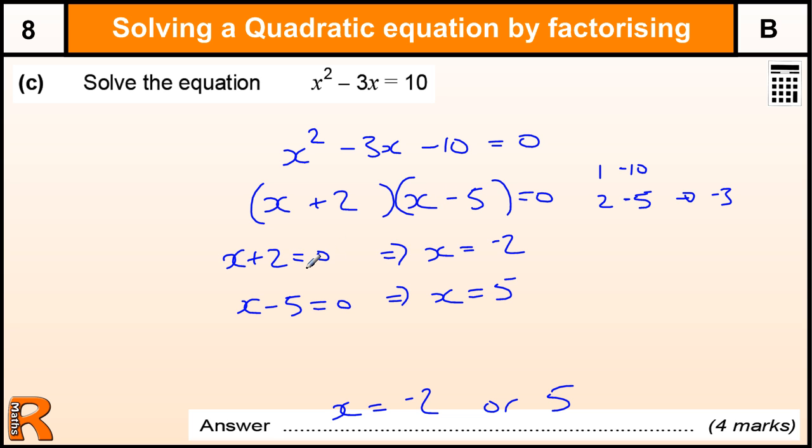And then you get another mark for having the correct values, so x minus 5 and x plus 2 in either way. And then one for the actual answer minus 2 or 5. So 4 marks.